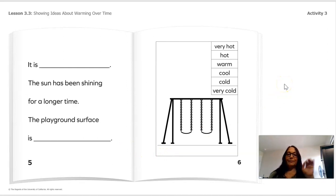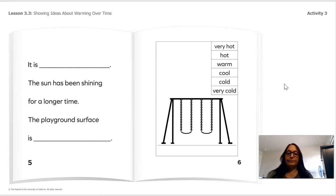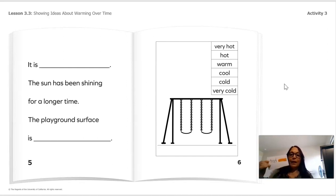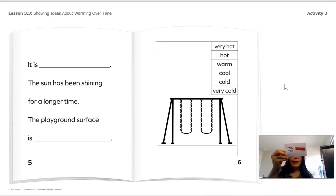Here we have: 'It is blank, the sun has been shining for a long time, the playground surface is blank.' Think about what two colors and two temperatures apply. Think about the thermometer. The sun has been shining for a longer time, so the playground surface is very hot — because the longer the sun shines, the surface is going to be very hot. That is correct.